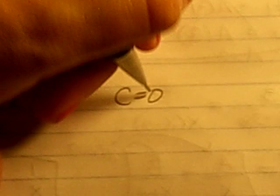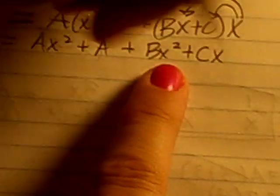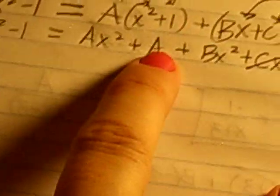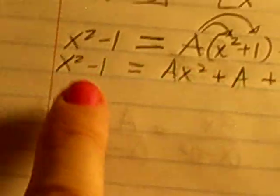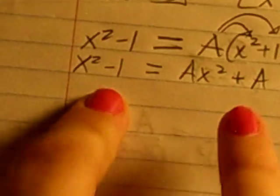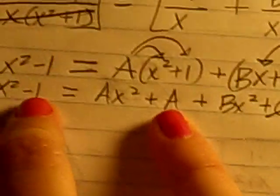Okay, so I know C is 0. Okay, now I can just ignore it. Okay, now looking back at it again, I see I have two x squared terms, and then an A. So this A is a constant, and on the left side, the only constant I have is negative 1. So this A must be negative 1.